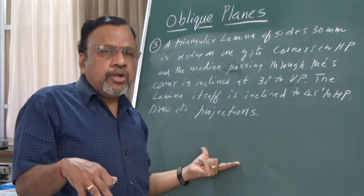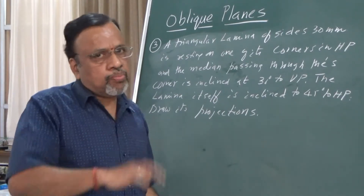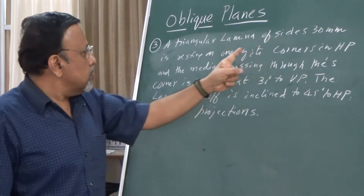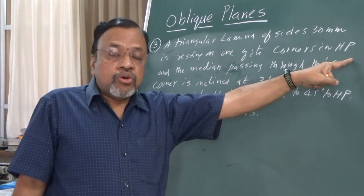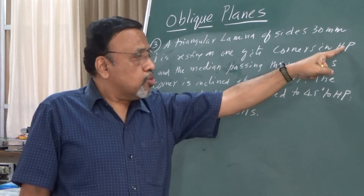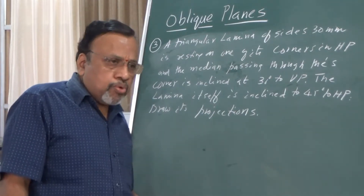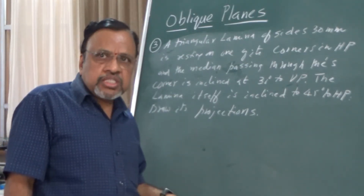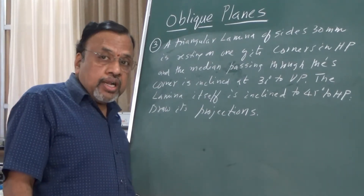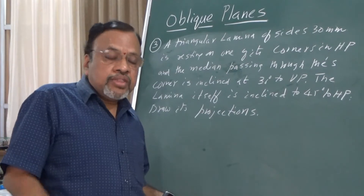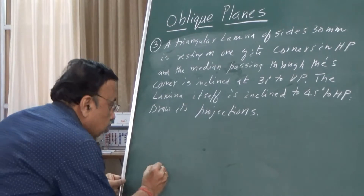Since the lamina is parallel to HP, the true shape will be seen in the top view, so we need to start from the top view. One of the corners is in HP. We need to ensure that in the initial position, the corner — where two adjacent sides meet — makes equal inclinations, meaning the line from the corner to the center of the lamina should be parallel to PP. So draw the XY line.